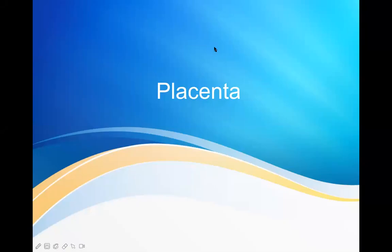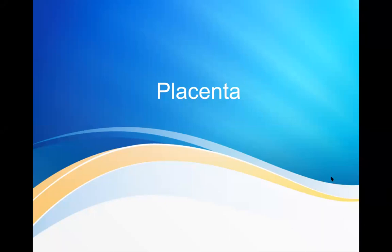Today we are going to talk about the placenta. The placenta is a very important organ during pregnancy — it is the organ through which oxygenated blood goes to the baby, and deoxygenated blood is received back from the baby and returned towards the mother. This is just one of the functions of placenta, illustrating its importance.